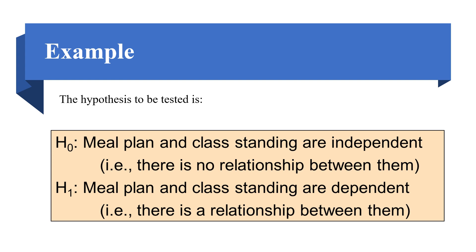The second step is to formulate the null and alternative hypotheses. The null hypothesis is that meal plan and class standing are independent of each other — no relationship between them. The alternative hypothesis is that meal plan and class standing are dependent — there is a relationship between them.